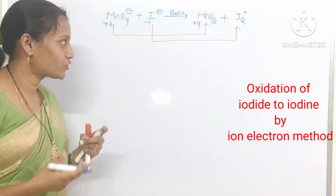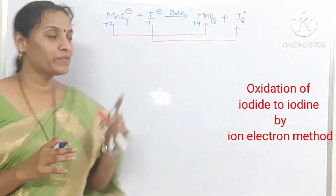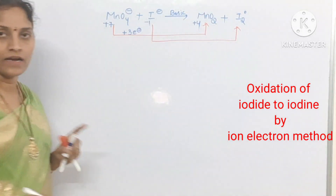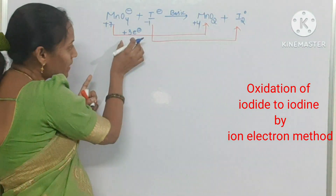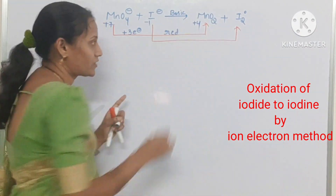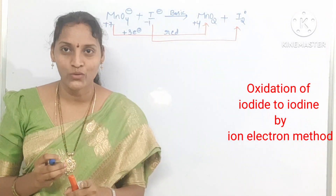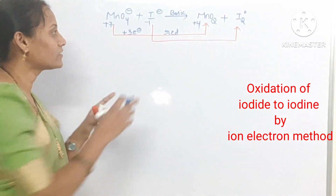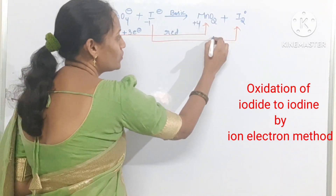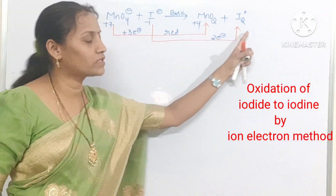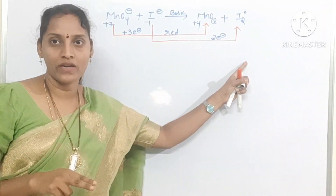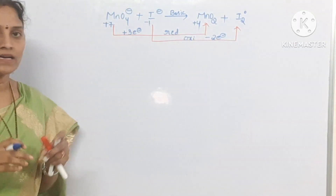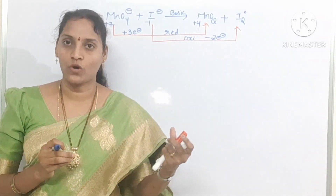Here, MnO4⁻ to MnO2 involves accepting 3 electrons, since +7 converts to +4 — that means taking 3 electrons. So adding 3 electrons here indicates this is the reduction half reaction. Conversion of MnO4⁻ to MnO2 is the reduction half reaction. Next, conversion of I⁻ to I2 — here 2 electrons are liberated, because 2 iodine atoms are in I2, so 2 electrons are released. This is the oxidation half reaction.